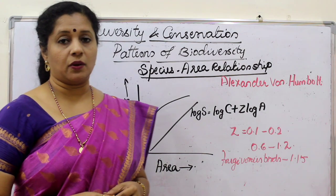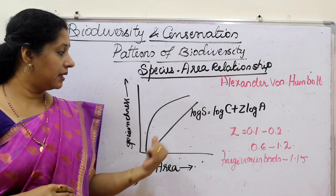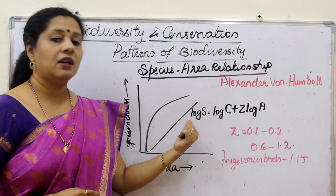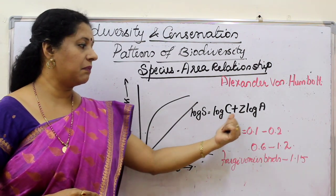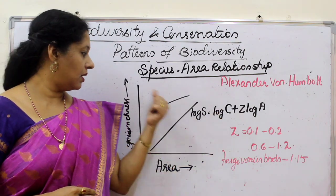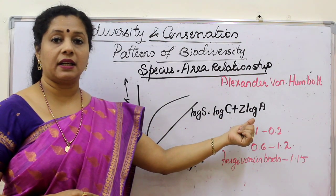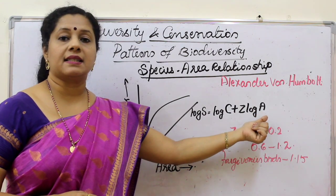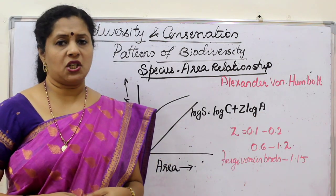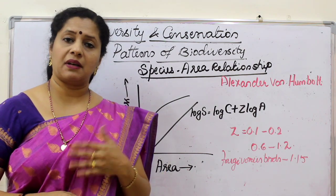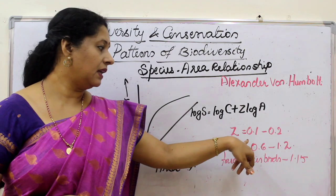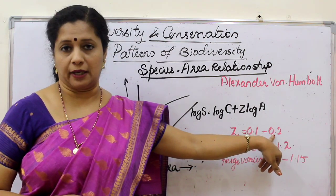If you take a logarithmic scale, what we get is a straight line. So the equation would be: log S = log C + Z log A. Here, S is the species richness, C is the y-intercept, Z is the slope or regression coefficient, and A is the area. When we calculate like this for any species from different parts of the world, the Z value usually comes within 0.1 to 0.2 only.